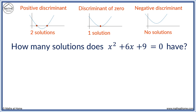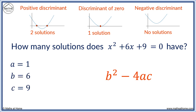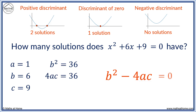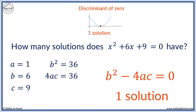We can use this to decide how many solutions x squared plus 6x plus 9 equals 0 has. The discriminant is b squared minus 4ac. a equals 1, b equals 6, c equals 9. b squared equals 36. 4 times 1 times 9 equals 36, so 4ac equals 36. b squared and 4ac are both 36. 36 minus 36 equals 0. If the discriminant is 0, we have one solution. We would need to complete the quadratic formula to find what this solution is, but we know that there will only be one.